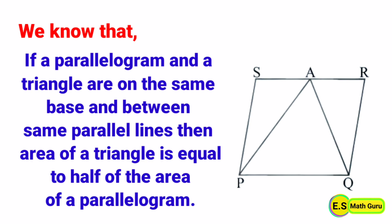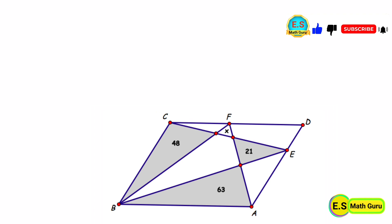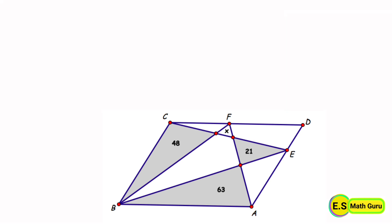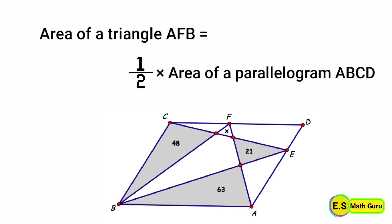Now let us apply this relation in the given problem. Dear friends, from the figure, parallelogram ABCD and triangle AFB are on the same base AB and between the same parallel lines AB and DC. Therefore, the area of triangle AFB is equal to half of the area of parallelogram ABCD.